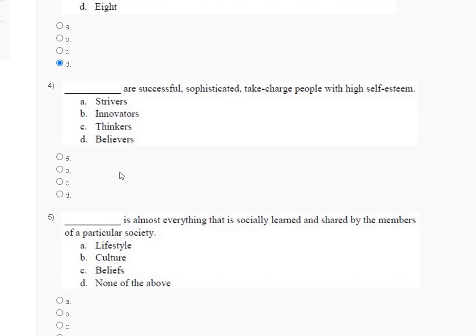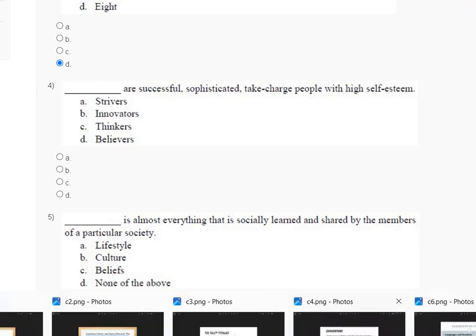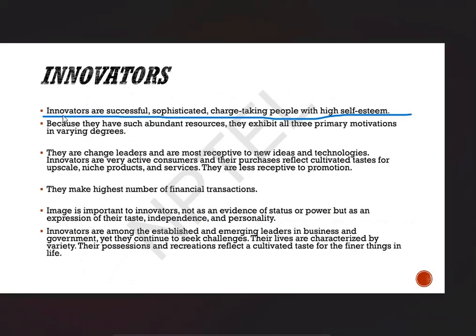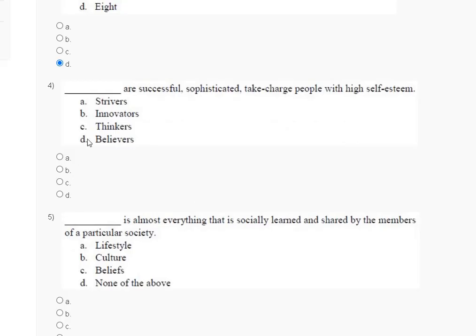Question number four: who are successful, sophisticated, take-charge people with high self-esteem? Options are: first — drivers, second — innovators, third — thinkers, fourth — believers. The explanation: innovators are successful, sophisticated, take-charge people with high self-esteem. So the correct answer for question number four is option B — innovators.